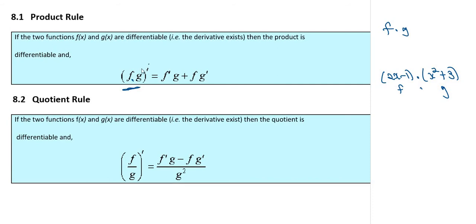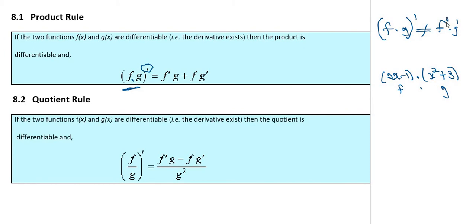We want to find the first derivative of those functions. The key point is that the derivative of a product is not equal to the derivative of f times the derivative of g. That's what catches everybody out — that is not true.